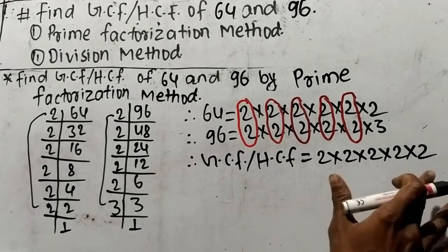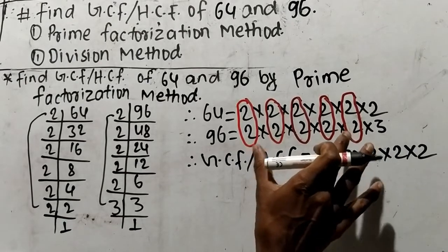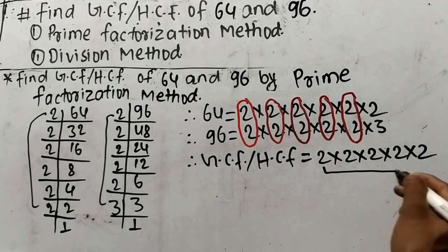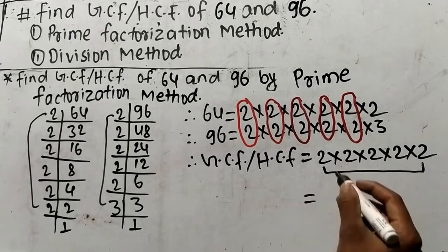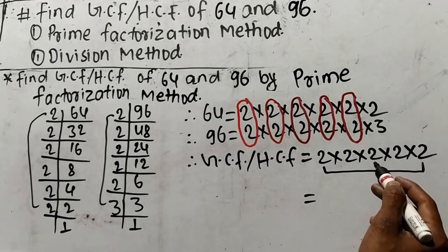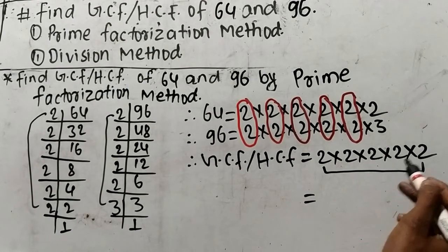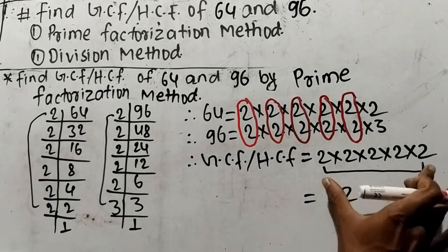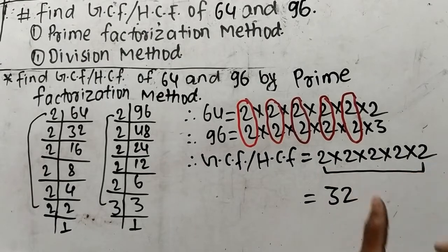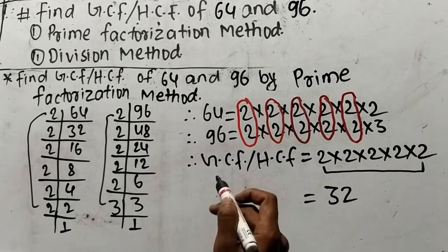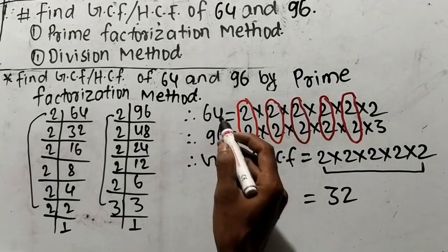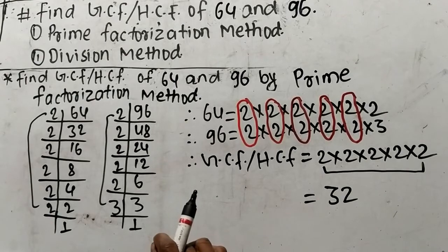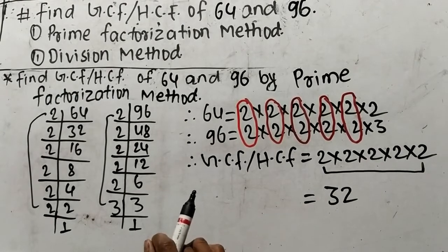Now we have to find out the product of all these common factors. It is 2 times 2 means 4, 4 times 2 means 8, 8 times 2 means 16, and 16 times 2 means 32. So 32 is the product of all these common factors, and 32 is the GCF or HCF of 64 and 96. In this way we can find out GCF or HCF by prime factorization method.